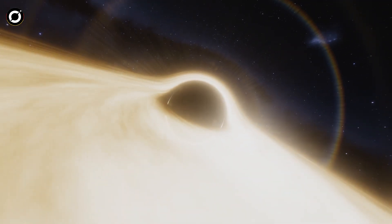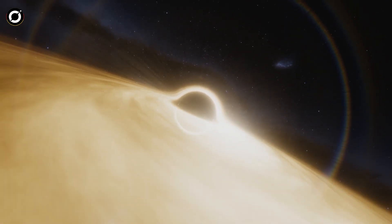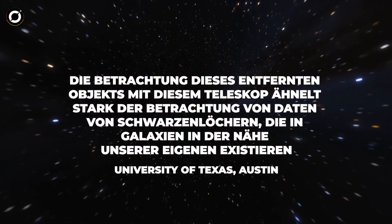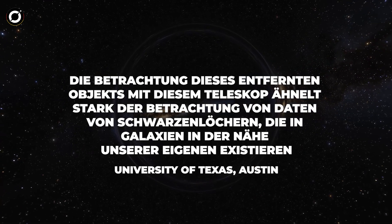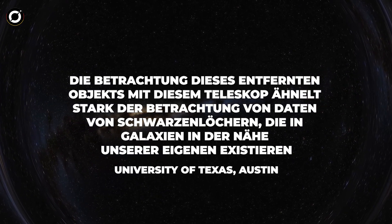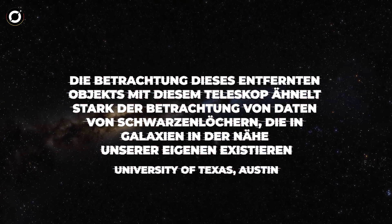Obwohl dieses Schwarze Loch, ein Objekt mit einer so starken Anziehungskraft, dass nicht einmal Licht entkommen kann, Milliarden Lichtjahre entfernt ist, können Forscher dank der Fähigkeit des Webb-Teleskops, extrem schwache Energie einzufangen, beobachten, was in CERS 1019 passiert. Die Betrachtung dieses entfernten Objekts mit diesem Teleskop ähnelt stark der Betrachtung von Daten von schwarzen Löchern, die in Galaxien in der Nähe unserer eigenen existieren, sagte Rebecca Larson, eine Astronomin an der University of Texas in Austin, die die Entdeckung leitete.